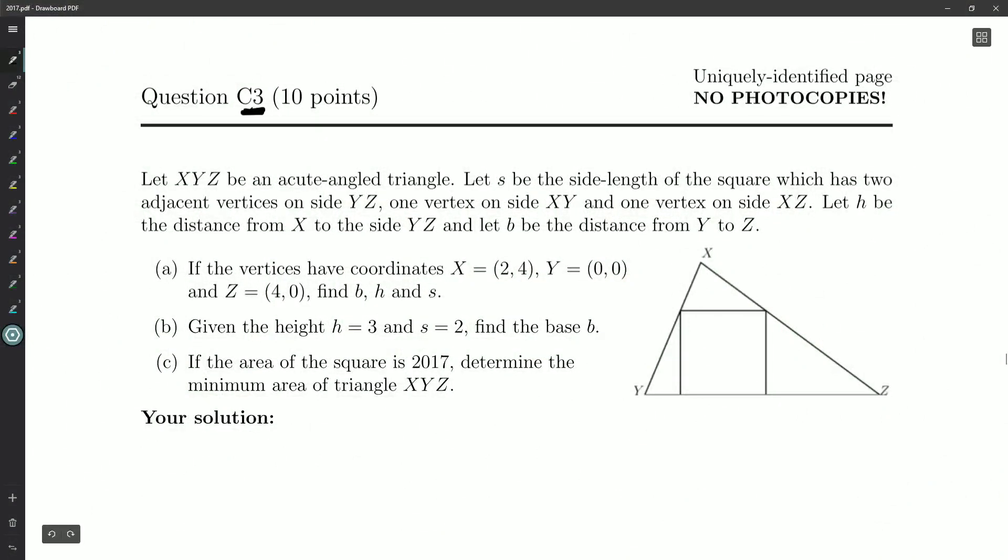Let XYZ be an acute angled triangle. Let s be the side length of the square which has two adjacent vertices on YZ, one vertex on XY and one vertex on XZ.